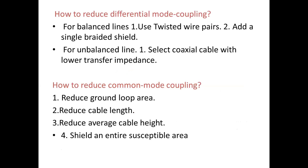How to reduce differential mode coupling: there are two categories — balanced line and unbalanced line. For a balanced line, use twisted wire and add a single braided shield. For an unbalanced line, select a coaxial cable with lower transfer impedance. To reduce common mode coupling: reduce ground loop area, reduce cable length, reduce average cable height, and shield the entire susceptible area.